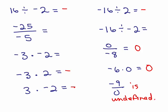Now let's go through — we've decided the signs, now we do the regular old division or multiplication. 16 divided by 2: we just ignore the signs since we've already decided whether the answer is positive or negative. 16 divided by 2 is 8. 25 divided by 5 is 5. 3 times 2 is 6. 3 times 2 is 6. 3 times 2 is 6. 16 divided by 2 is 8. 16 divided by 2 is 8.